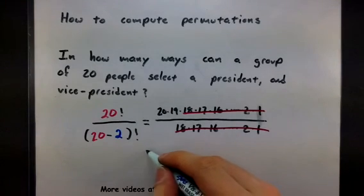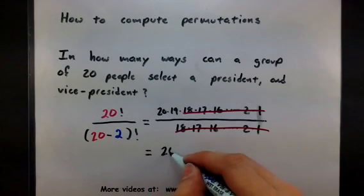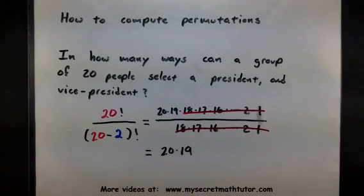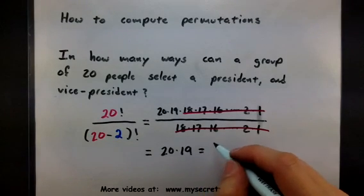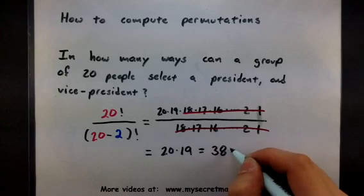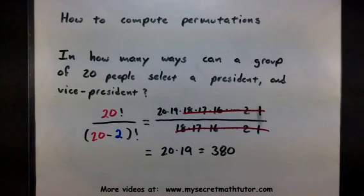And so the only thing we really have to compute is 20 times 19. Well, that's not so bad at all. In fact, if we take 20 and multiply it by 19, we get an answer of 380. And sure enough, that's how many ways we can select a president and vice president from a group of 20 people.